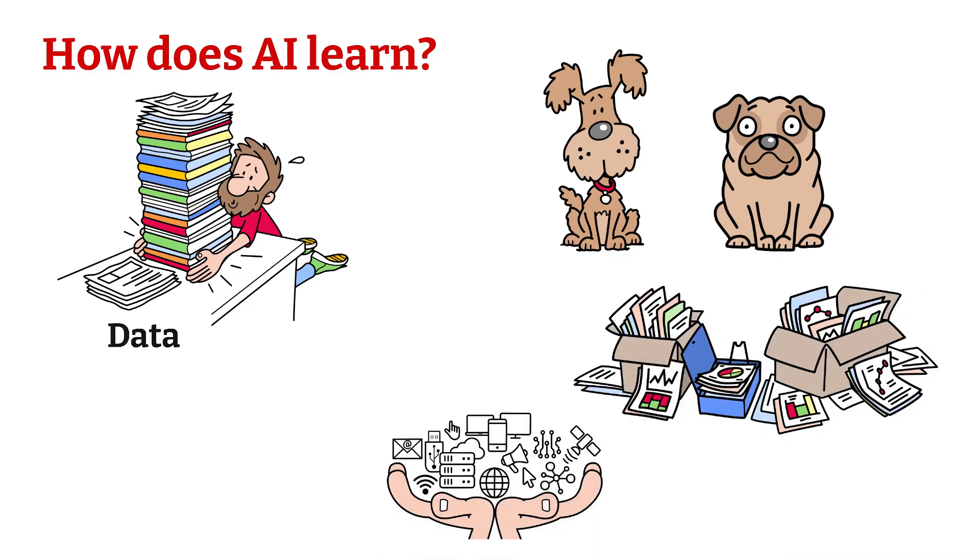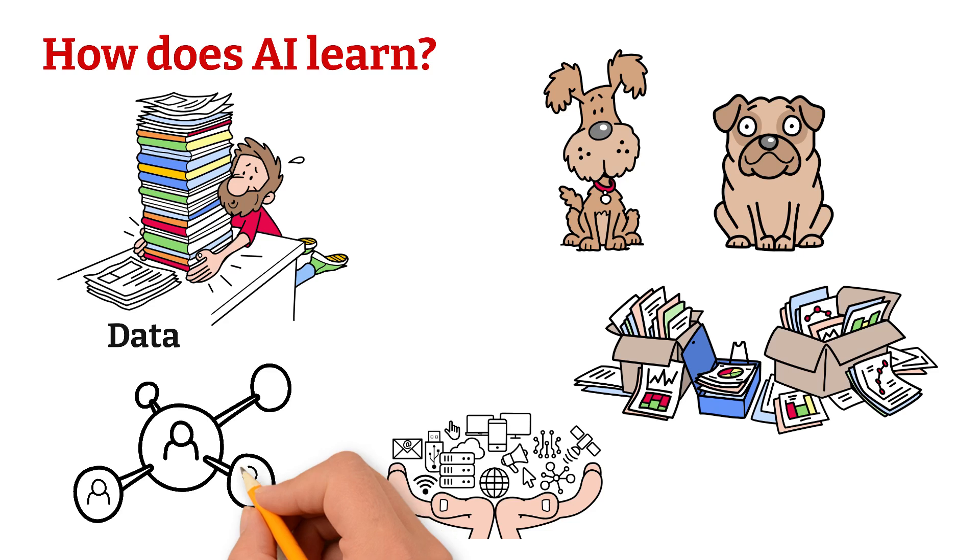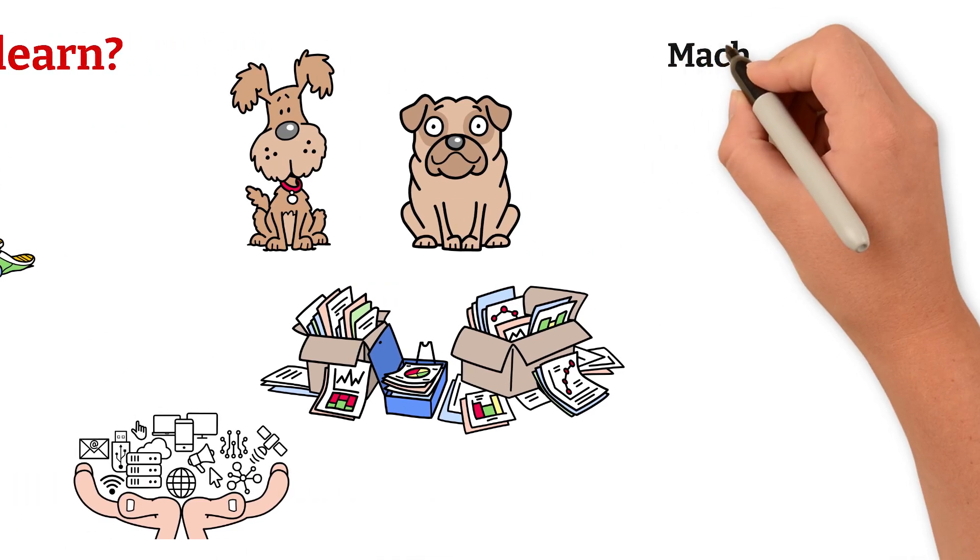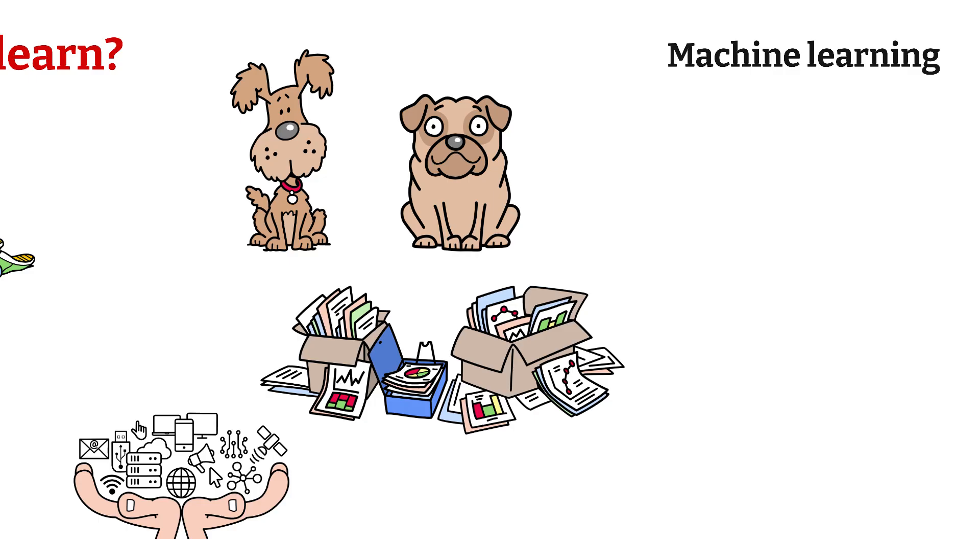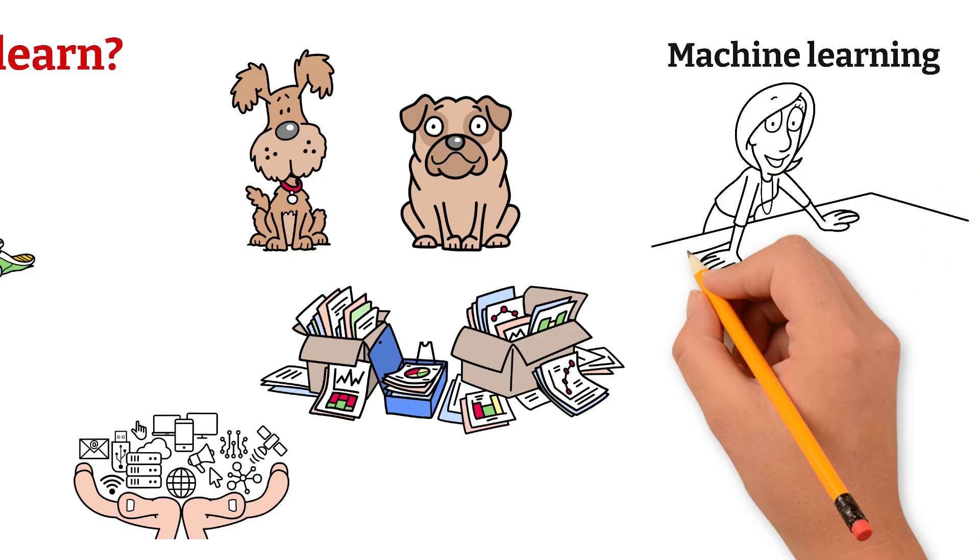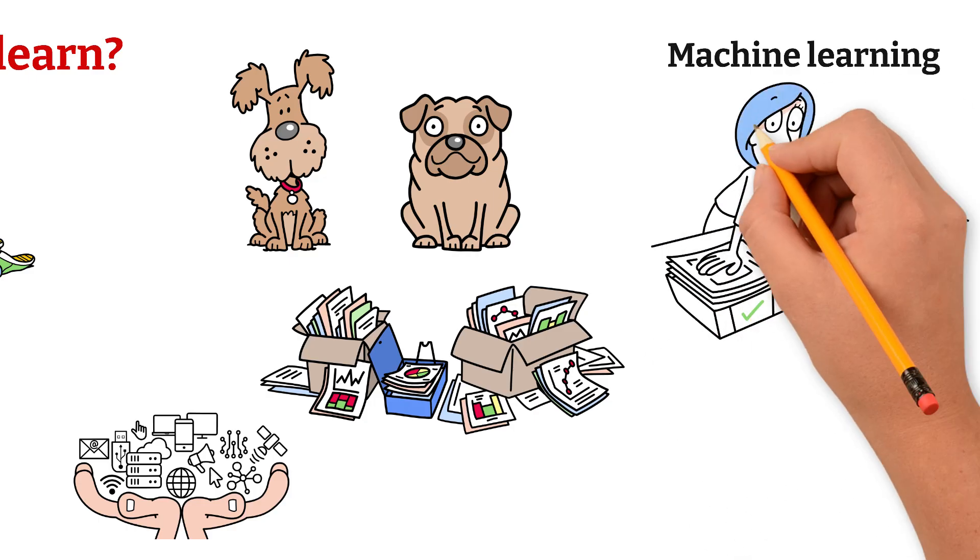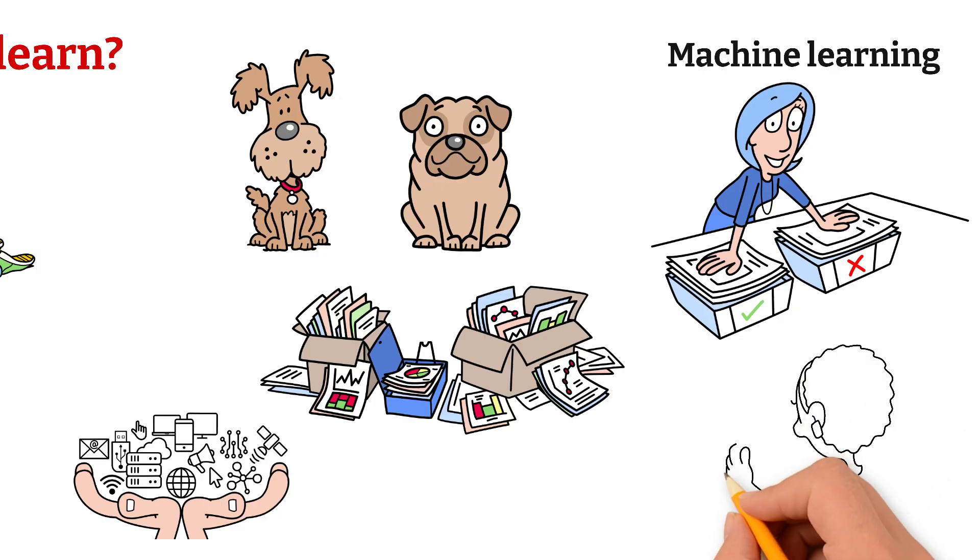It finds patterns in how words, ideas, and questions are usually connected. This process is called machine learning. Basically, the AI is trained by feeding it data and showing it what's correct, over and over again, until it gets really good at predicting things.